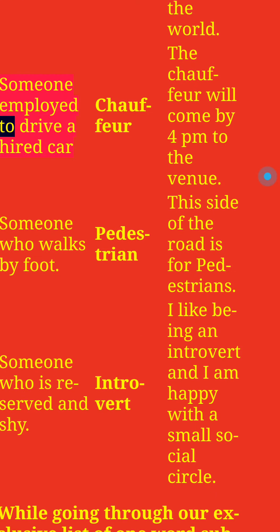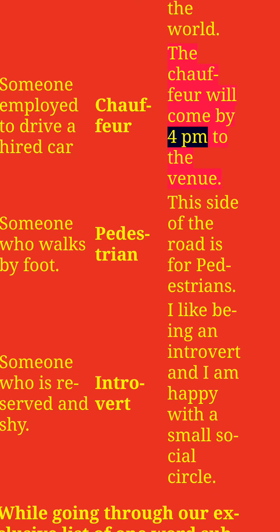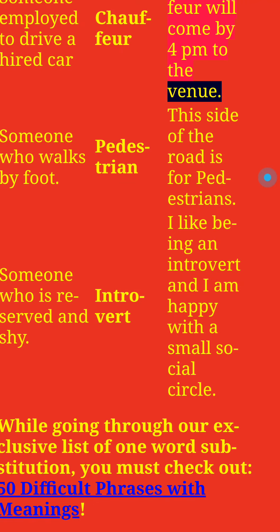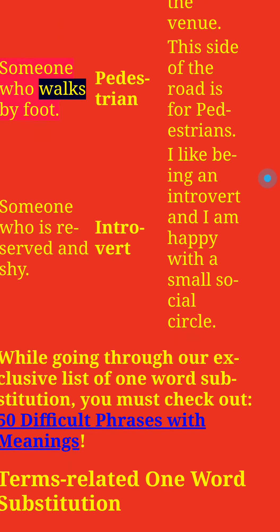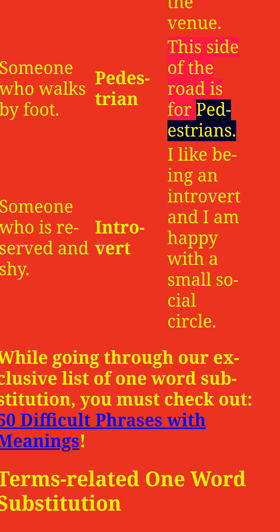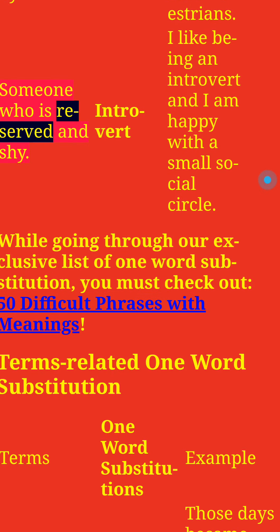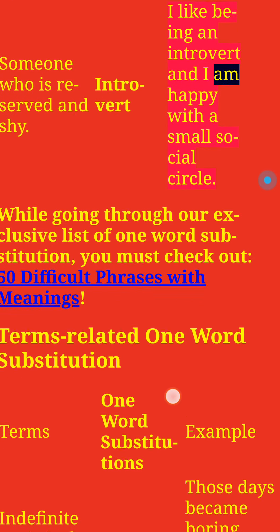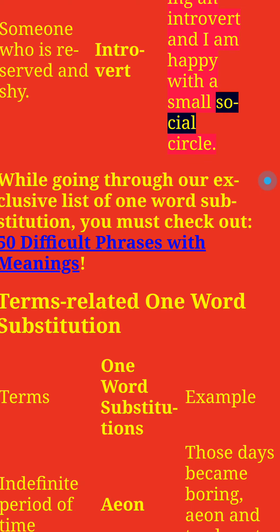Someone employed to drive a hired car: Chauffeur. The chauffeur will come by 4pm to the venue. Someone who walks by foot: Pedestrian. This side of the road is for pedestrians. Someone who is reserved and shy: Introvert. I like being an introvert and I am happy with a small social circle.